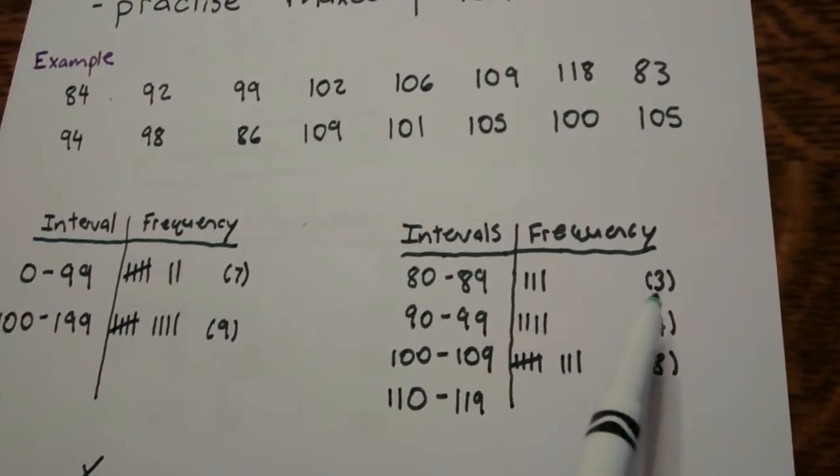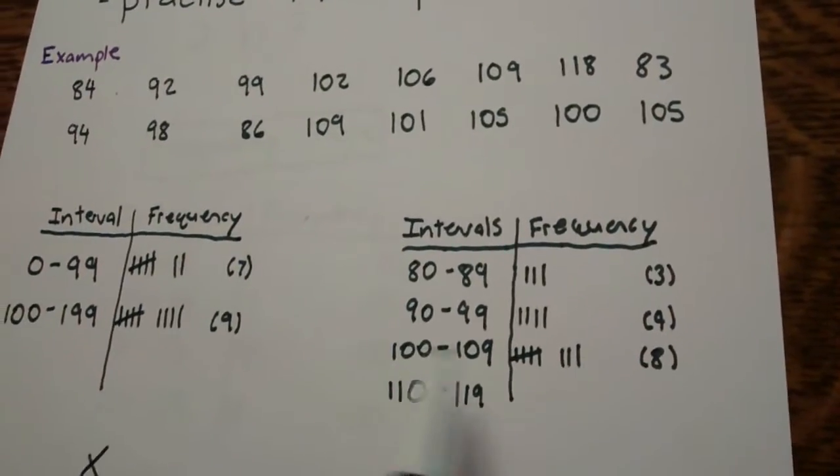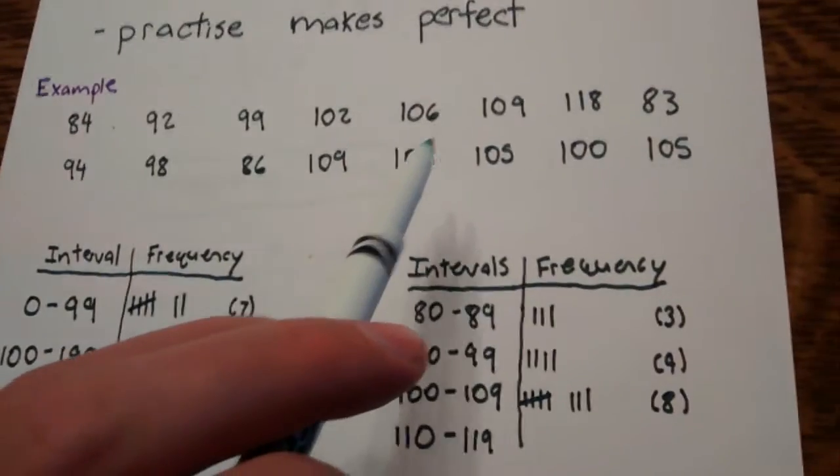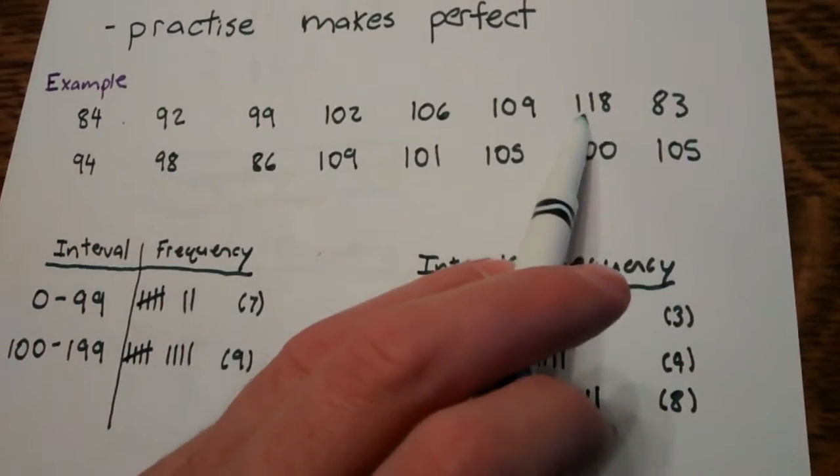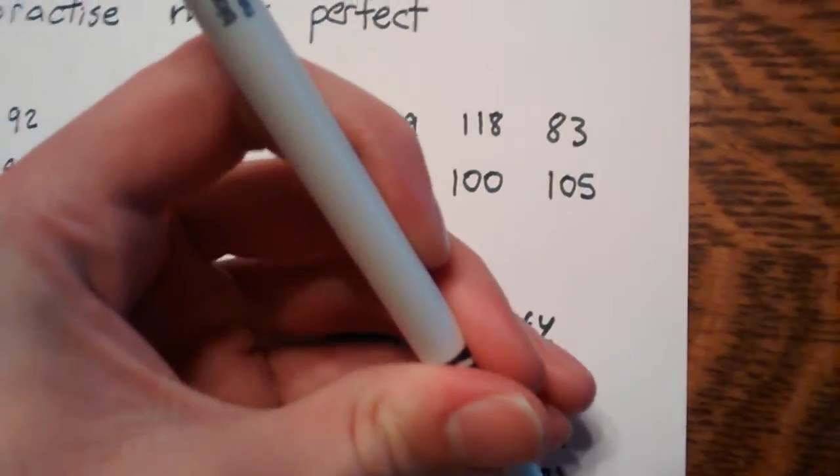So I have 3 between 80 and 89, I have 4 for 90 to 99, I have 8 between 100 and if I count 110 to 119, I only see 1, 118. So I'm going to put a 1 there and put the 1 in brackets just so I know.